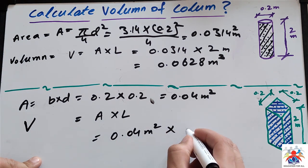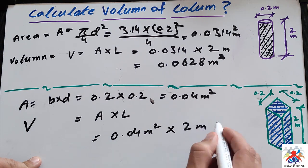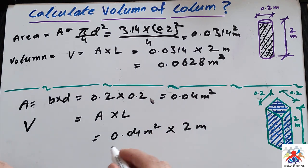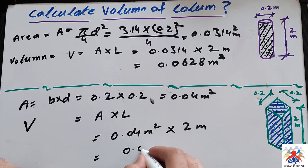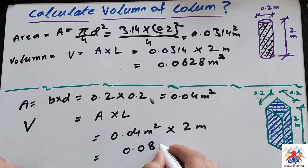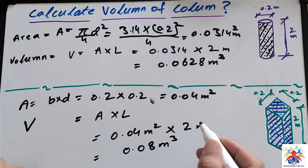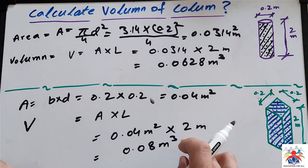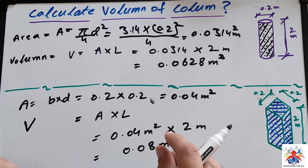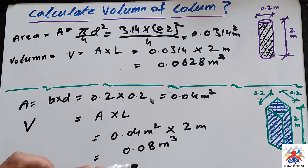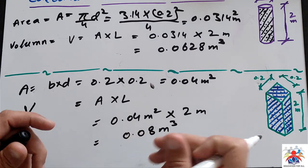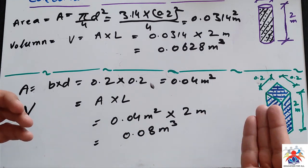Multiplied by length, we also have 2 meters—length or height is the same thing. The final answer is 0.08 m³. If we have to calculate the weight of the column, I will also add the weight. Weight equals volume multiplied by density.